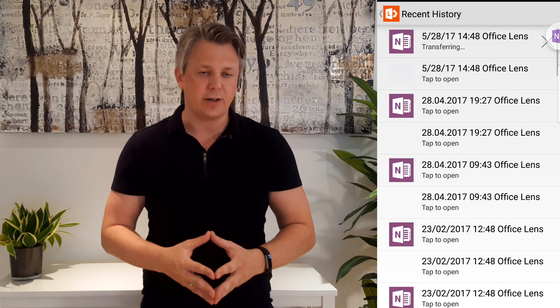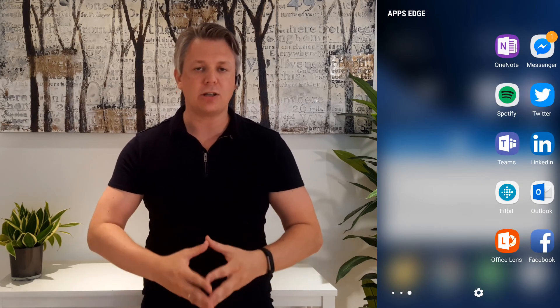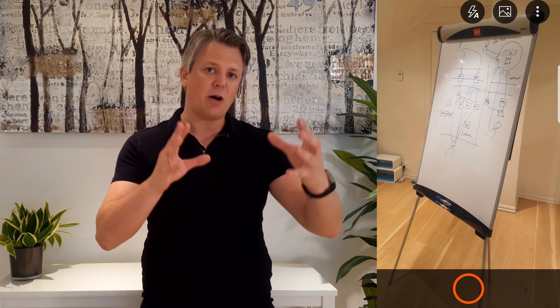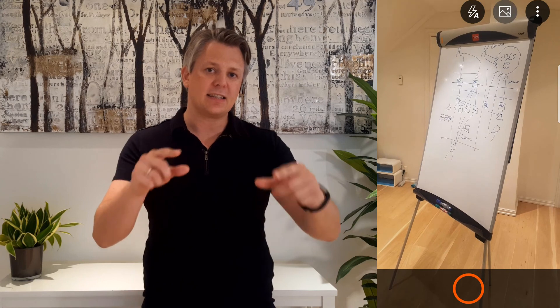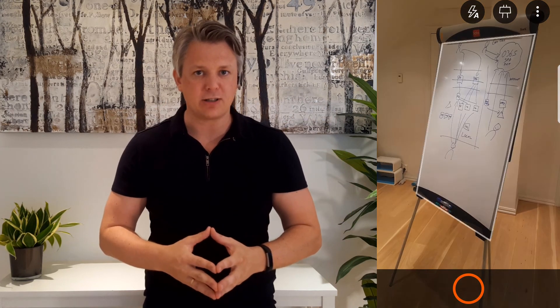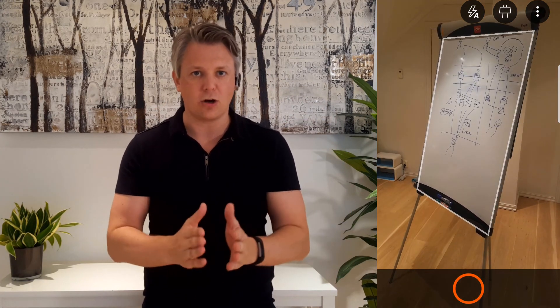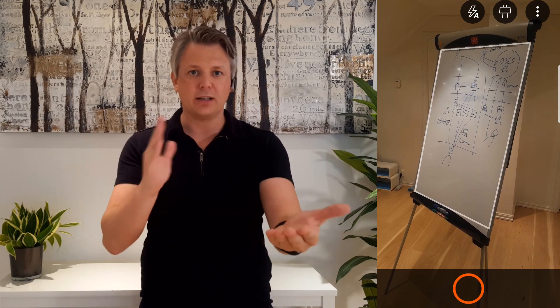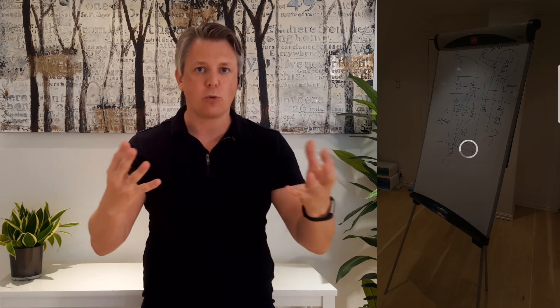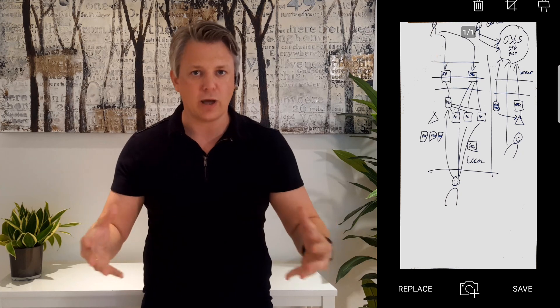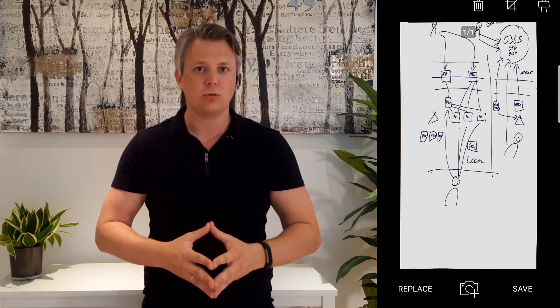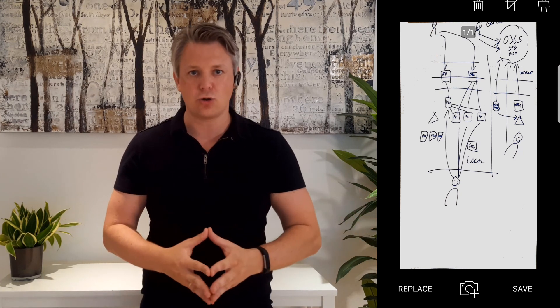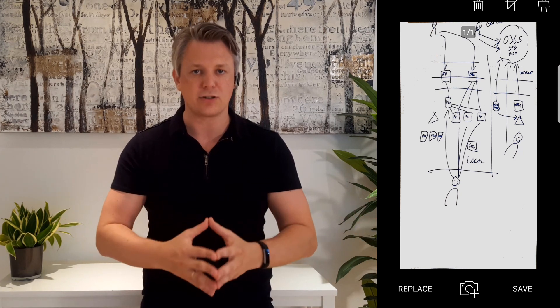I want to show you another example where I take a picture from a whiteboard and notice how Office Lens really formats the picture in a good way. So even if you have a bad angle, it will straighten that up and make it more readable. It's really great and the best way to take notes during a conference, during workshops, and so on.